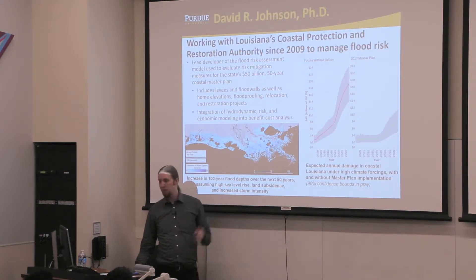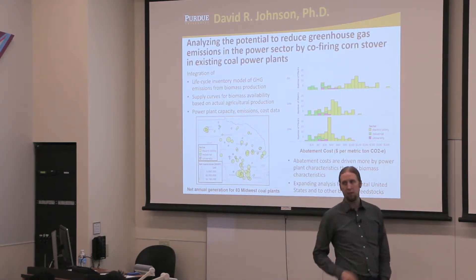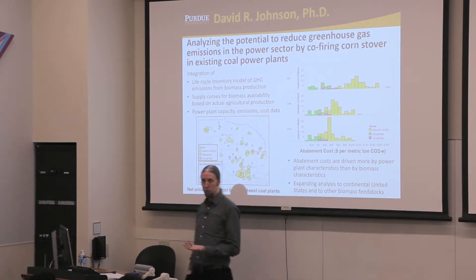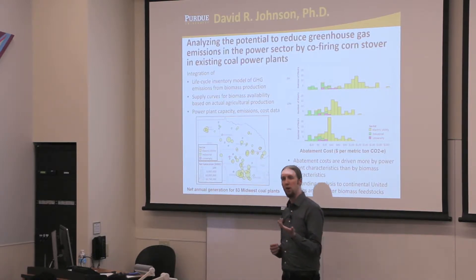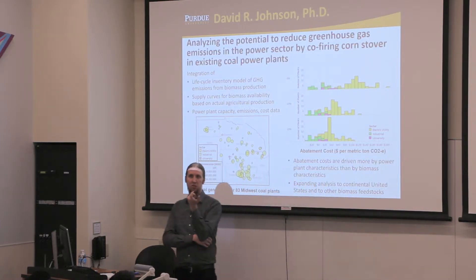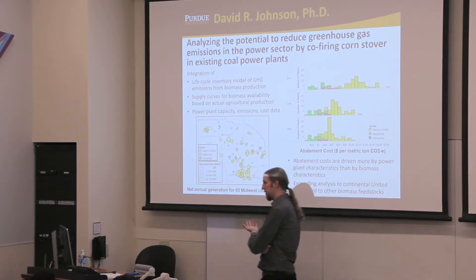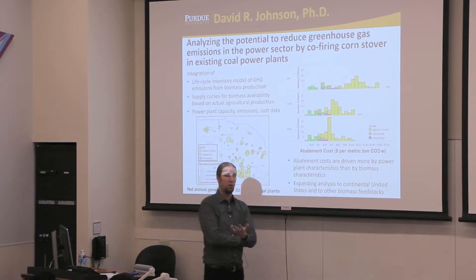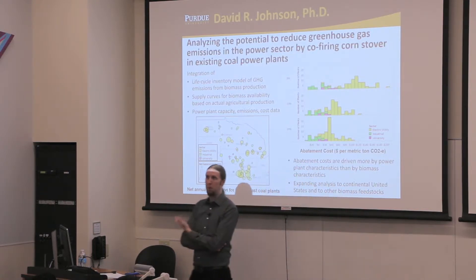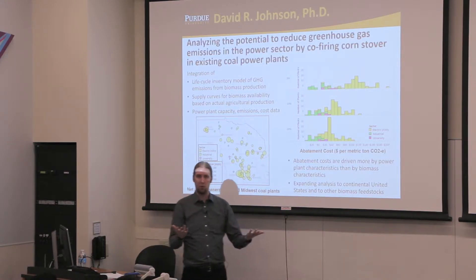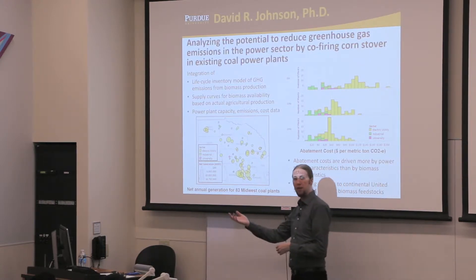That's the key behind a lot of the decision support I do with government agencies. Another application I'm working on now with one of my students is on biofuels — specifically looking at the potential to co-fire corn stover or biomass. Corn stover is basically everything left besides the kernels of the corn: the cob, the stalks, the leaves — all of that harvested residue that would otherwise be left on the field to enrich the soil.